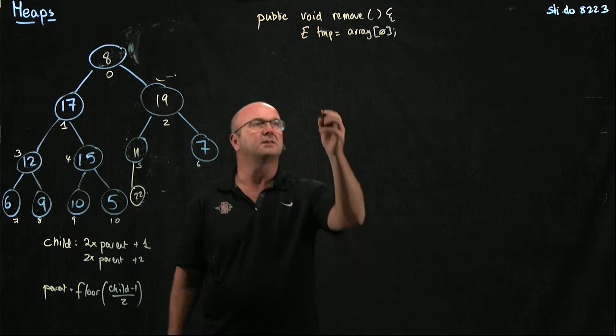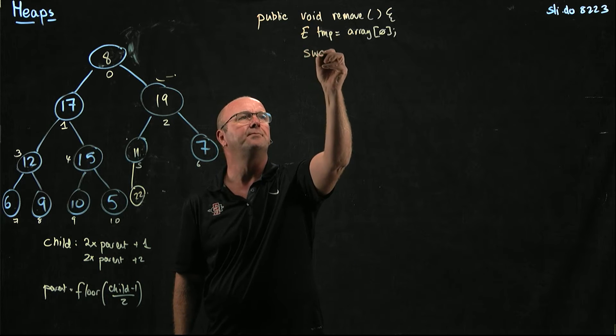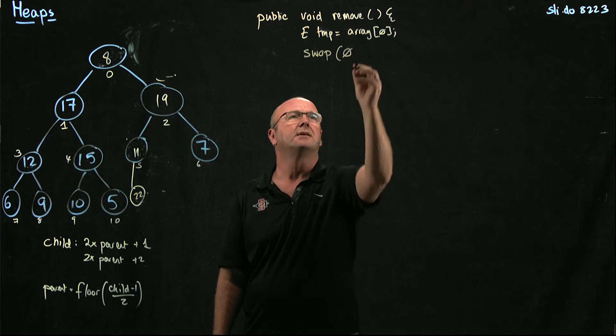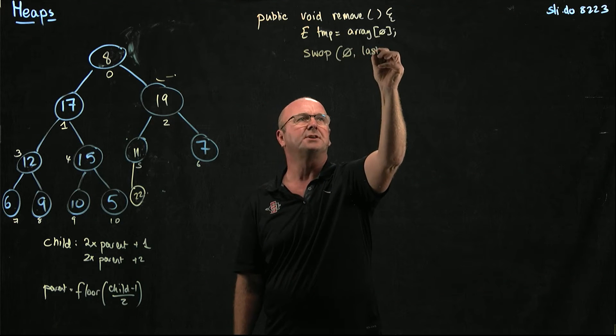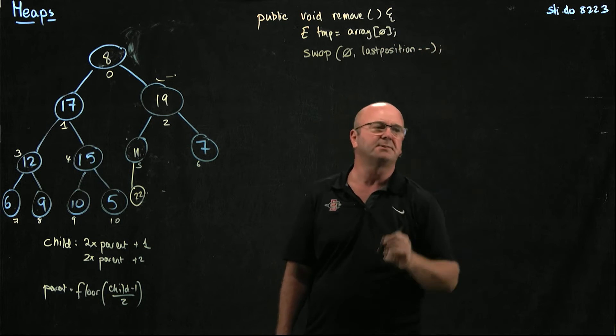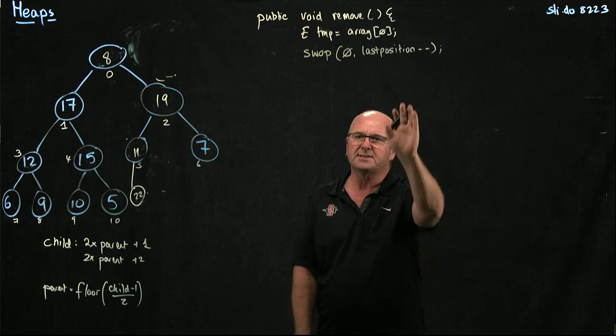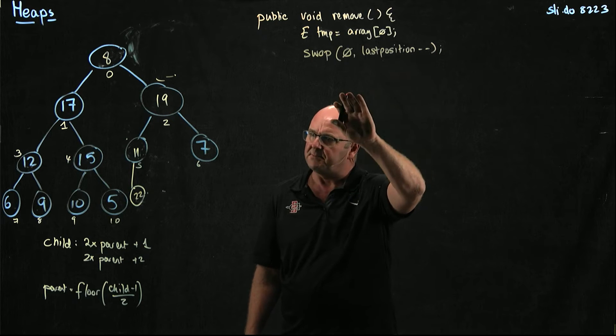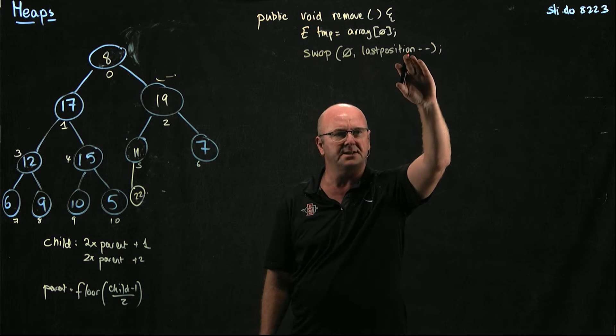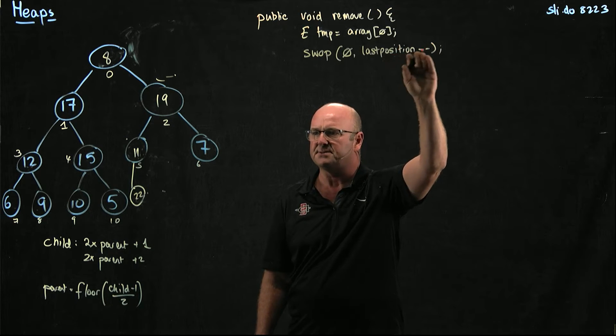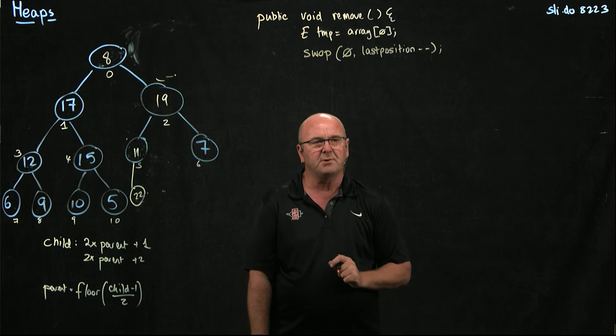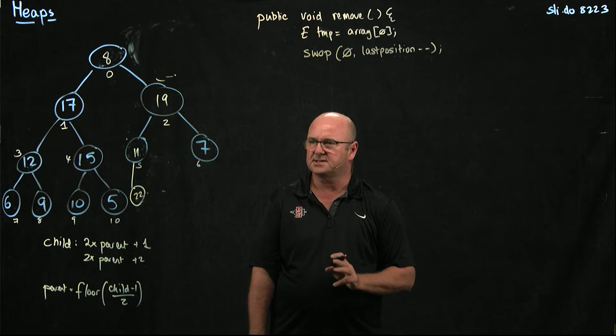So what I'm going to do is I'm going to swap, and I'm going to swap position 0 with last position, and as I do that, I decrement my last position counter. Notice the difference in the previous example in the add method. I incremented last position and then used it. This time, I use last position and then decrement it. And I'll explain why we do that in just a second.